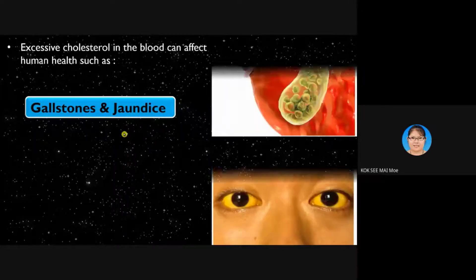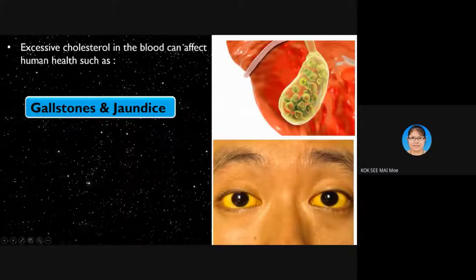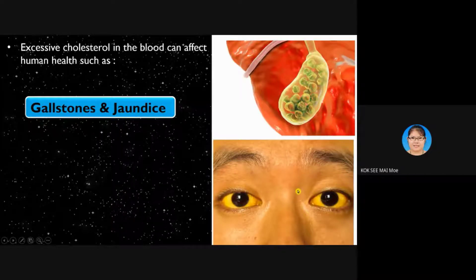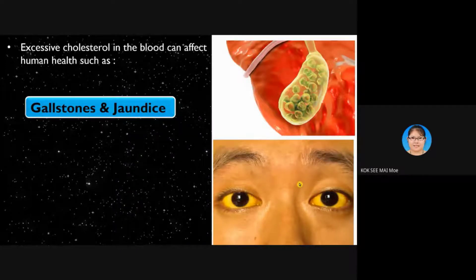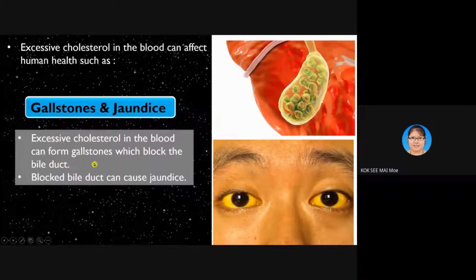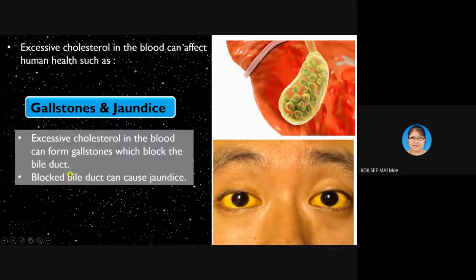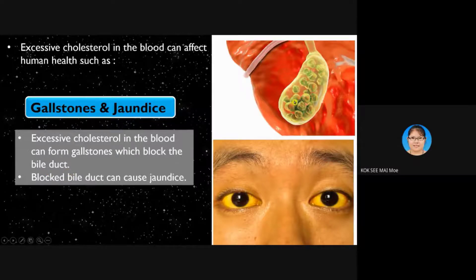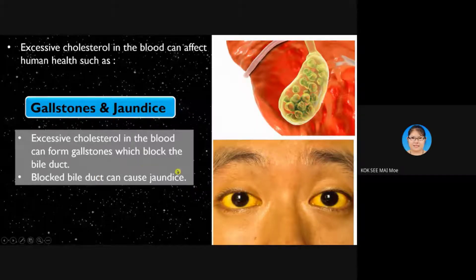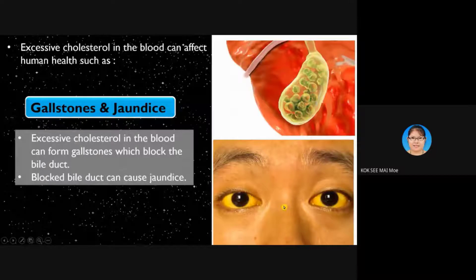Looking at the diagram: gallstones form in the gallbladder, where stones collect and block the bile duct. This causes jaundice, where the face and body turn yellow. Excessive cholesterol in the blood forms gallstones that block the bile duct — this causes pain and leads to jaundice.